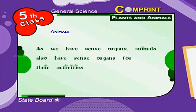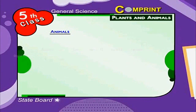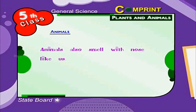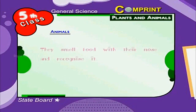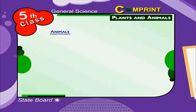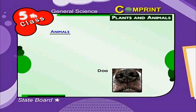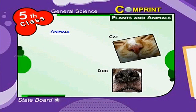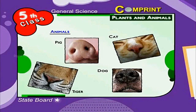As we have sense organs, animals also have sense organs for their activities. Animals also smell with their nose like us. They smell food with their nose and recognize it. For example, dog, cat, tiger and pig.